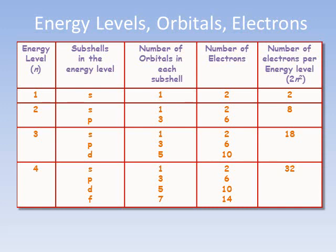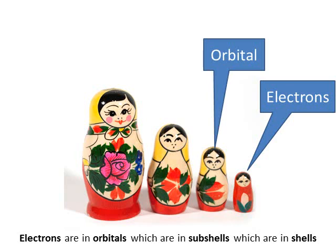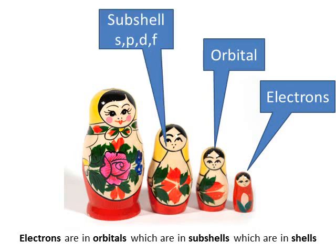The same pattern is repeated for the seventh shell and the sixth shell. So, just recapping, the model says that we have electrons inside orbitals, which are inside subshells, which are inside shells.